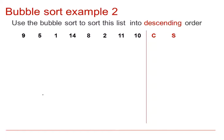Here we have example 2. In this case, we are asked to use the bubble sort to sort the list into descending order. You can see that we have got C and S for the comparisons and swaps at the side.